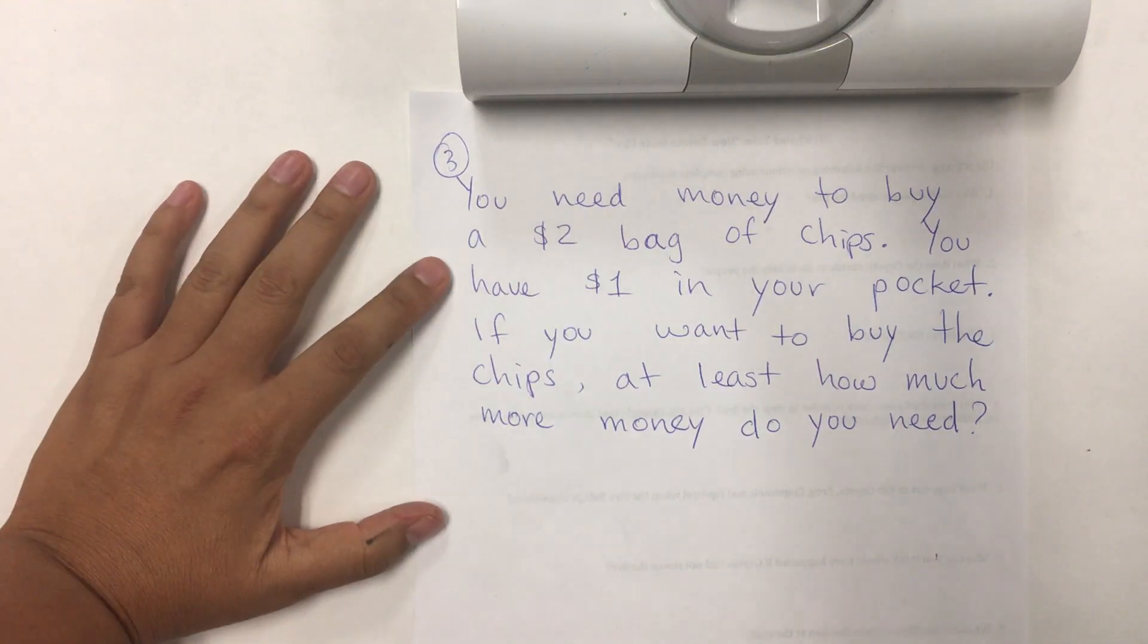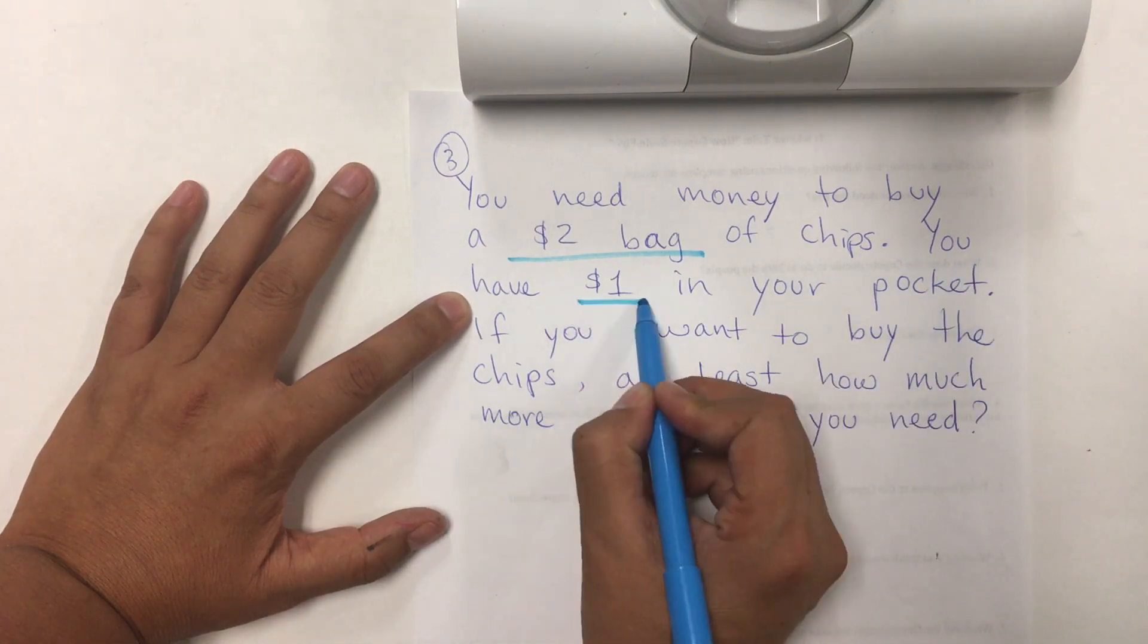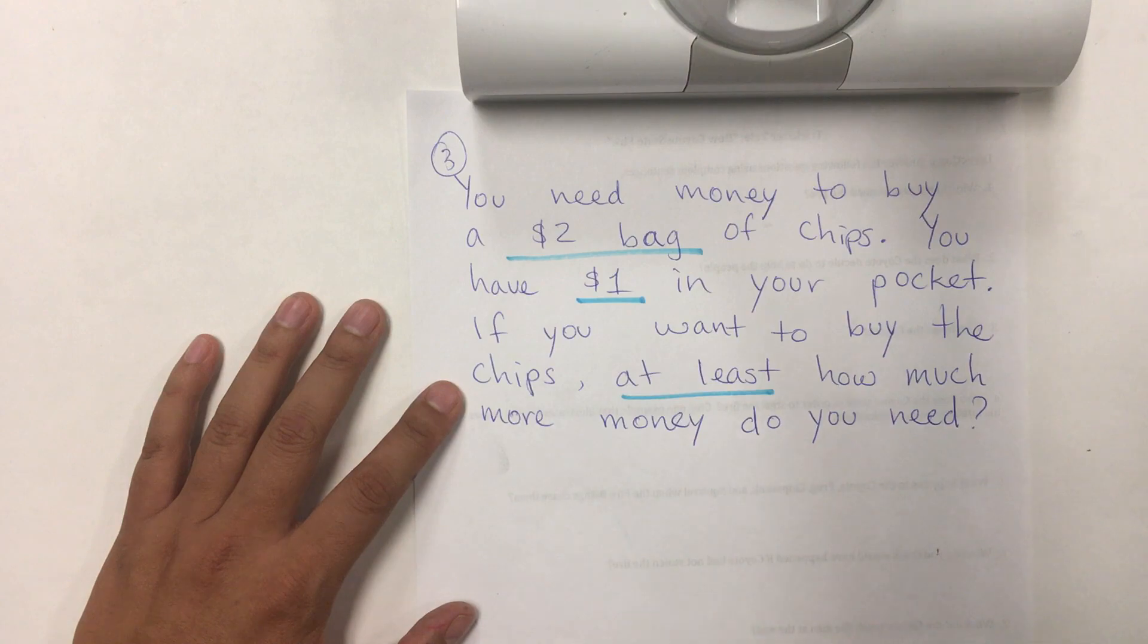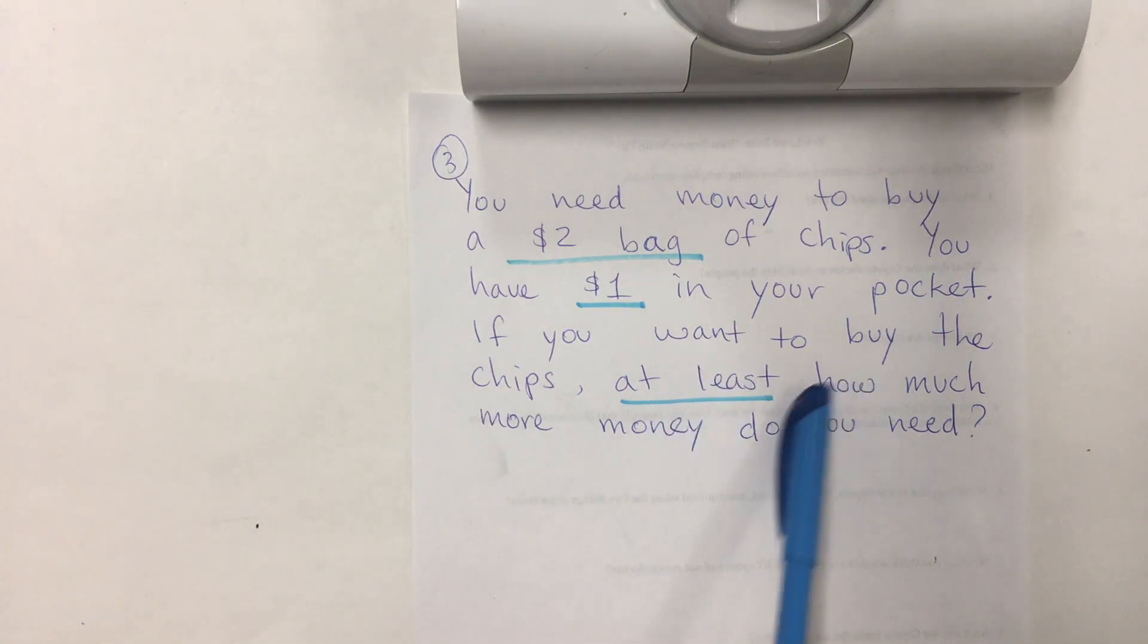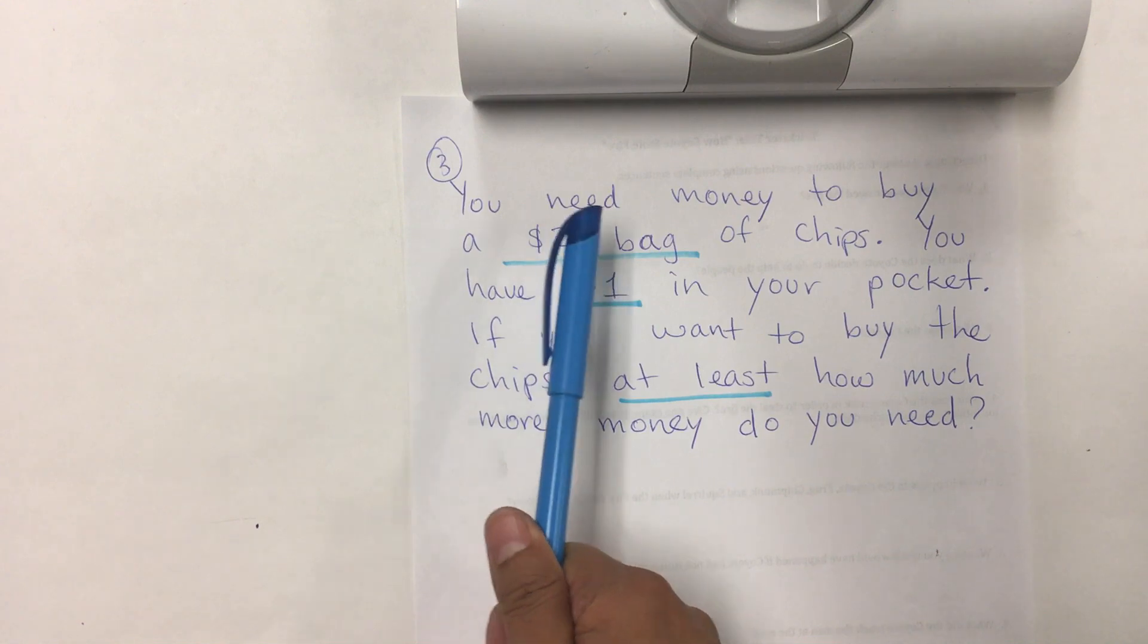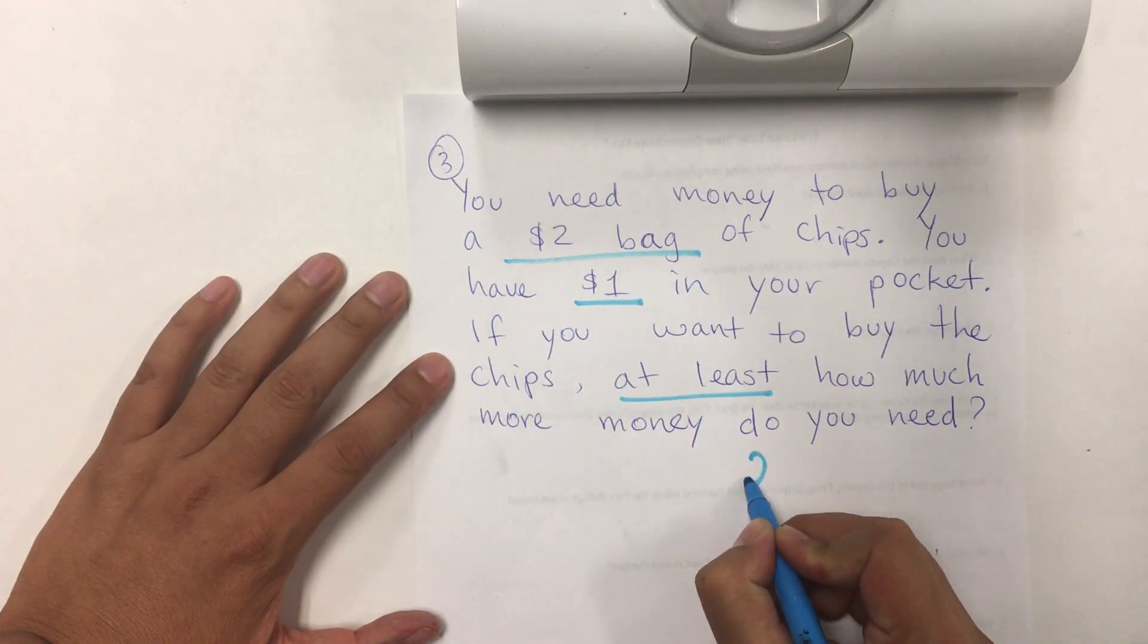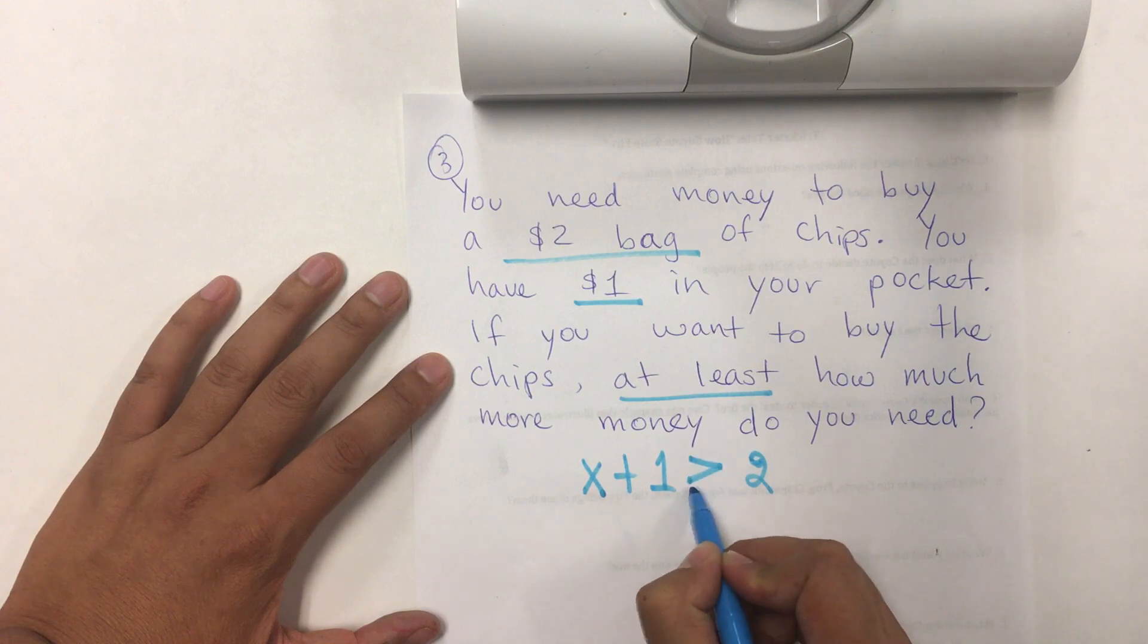Let's do another one. It says, you need money to buy a $2 bag of chips. You have $1 in your pocket. If you want to buy the chips, at least, how much more money do you need? At least. In here, we have to ask our questions because the information is kind of mixed. What you have is, what you need is a certain amount of money plus the $1. And it should be, if you think about it, equal to or greater than $2, right? You need, at least, meaning you need either $2 or $3 or $4. Even if you have change, it's okay. But, you cannot have less than $2. So, I'm going to put the $2 down here. And then, the money that you need plus the $1 needs to be greater or equal than $2.